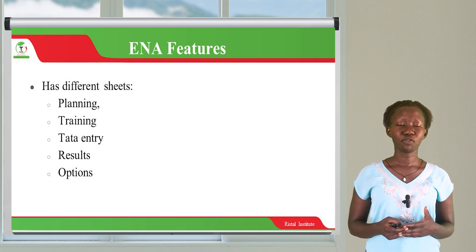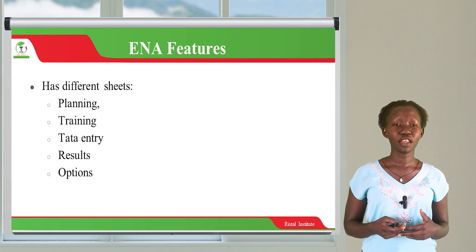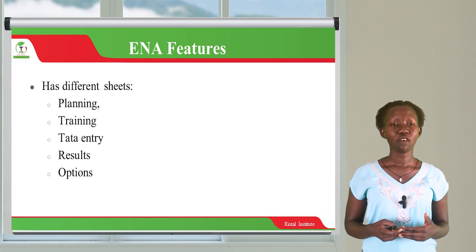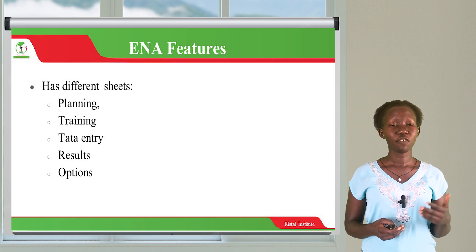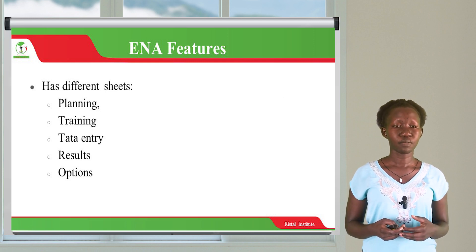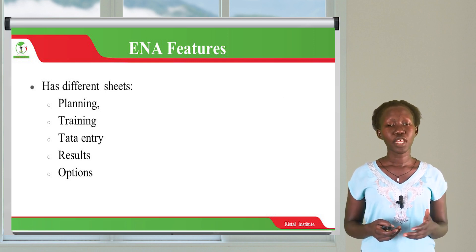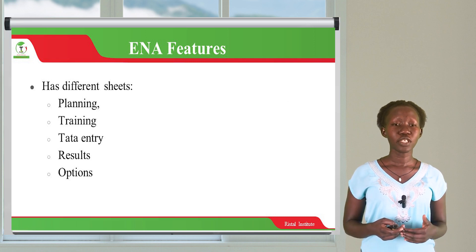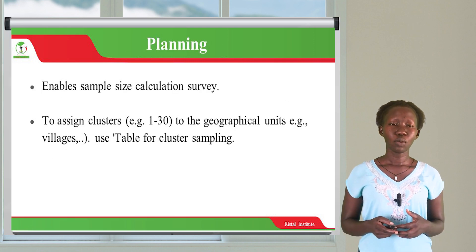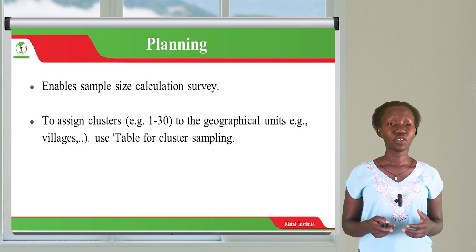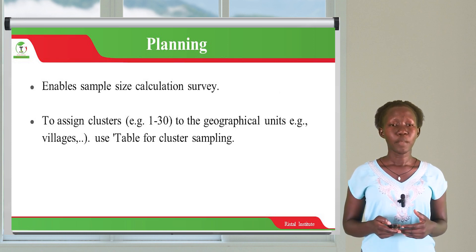Some of the features located in ENA for SMART that you're able to work with — we have basically five sheets. We have a sheet for planning, for training, for data entry, for results, and also options. We're going to look at each of these sheets in detail, starting with planning.